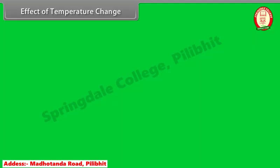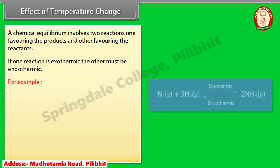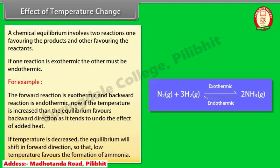Effect of temperature change: a chemical equilibrium involves two reactions — one favoring the products and the other favoring the reactants. If one reaction is exothermic, the other must be endothermic. For example, if the forward reaction is exothermic and the backward reaction is endothermic, then if the temperature is increased, the equilibrium favors the backward direction, as it tends to undo the effect of the added heat. If temperature is decreased, the equilibrium will shift in the forward direction. So, low temperature favors the formation of ammonia.